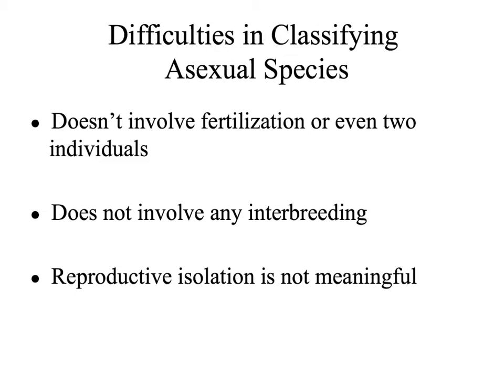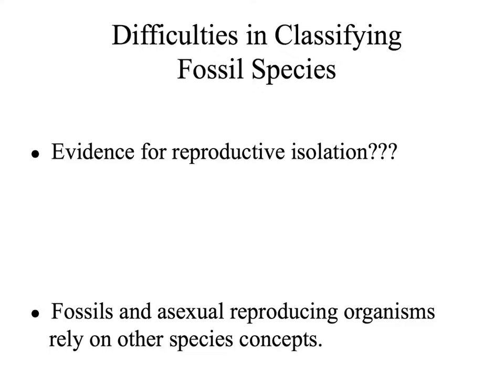The biological species concept has some problems as well. This concept does not work well if organisms reproduce asexually or make clones of themselves, because for this concept to work, we need a reproductive event between two individuals — male and female. This concept also has problems when trying to apply it to fossils, since it is very difficult to tell if two fossil skeletons ever reproduced together. So when looking at fossils and asexually reproducing organisms, scientists have to rely on other species concepts — generally the morphological species concept — to help group and classify organisms.